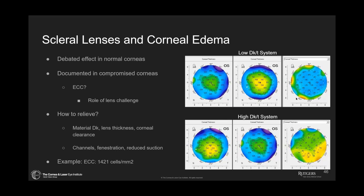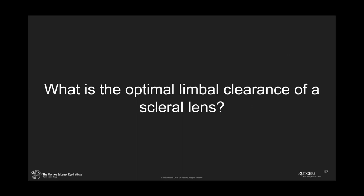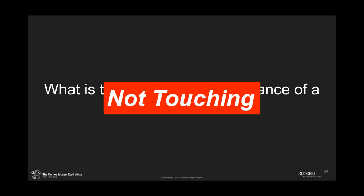So the proof is in the cornea and the way it responds. What's the optimal limbal clearance of a scleral lens? Not touching — that's my answer. We don't want to be excessive, but we don't want to touch. What's the best way to evaluate limbal clearance if you don't have an OCT? Sodium fluorescein is a great way to do it. Let's talk about how to evaluate a lens efficiently on these eyes.